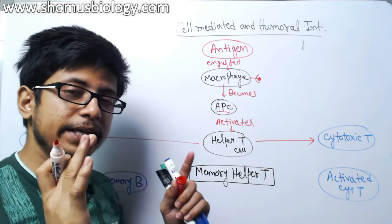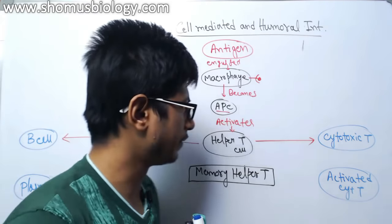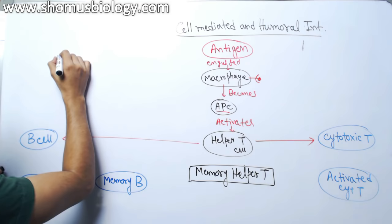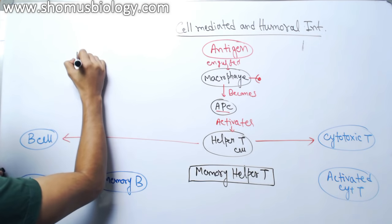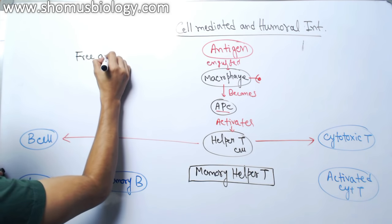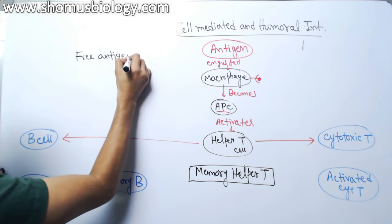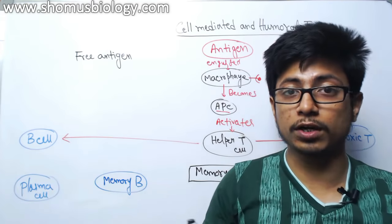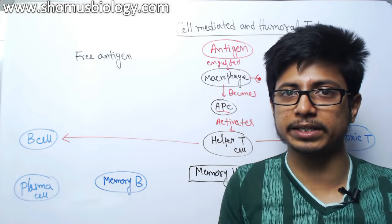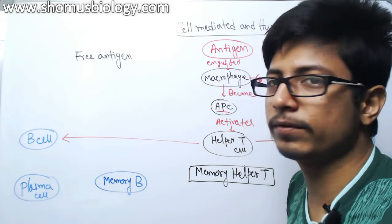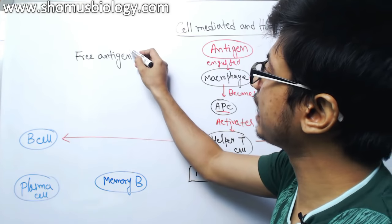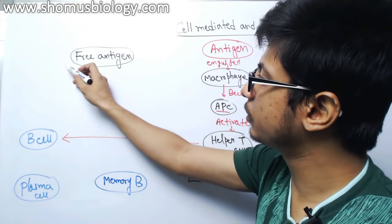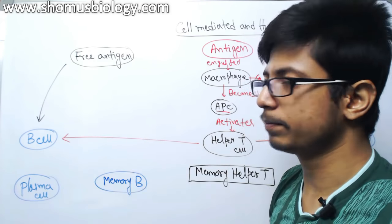This is the pathway when the pathogen enters as a whole. Now, if there is a free antigen — a portion of a bacterial body, like a portion of a flagella, a portion of the cell membrane or cell wall of bacteria, or some protein portion of the bacterial body — that will act as a free antigen, and that free antigen is going to directly activate the B cell.